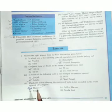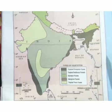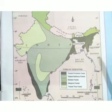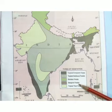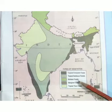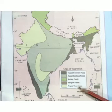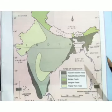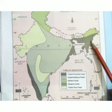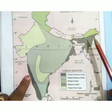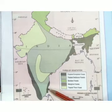For map work, in your fair copy first take a physical map of India and locate all different kinds of forests: tropical evergreen forest, tropical deciduous forest, mountain forest, mangrove forest, and tropical thorn forest. Tropical evergreen forest can be seen near the eastern states, and in Karnataka, Kerala, and the coastal areas.